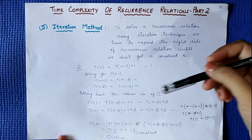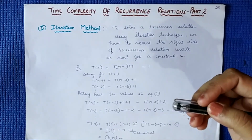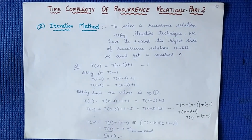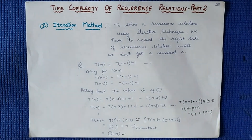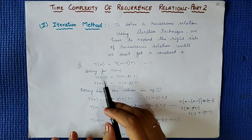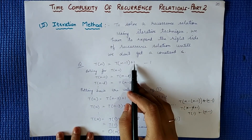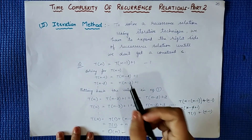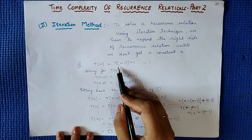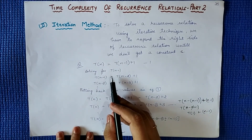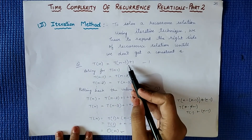In Part 2, we will study the iteration method — time complexity and recurrence relations. In the iteration method, we call it repeatedly. I have taken an example: T(n) = T(n-1) + 1. It is a simple example. We don't know the value of T(n-1), so we put N-1 in the same equation.